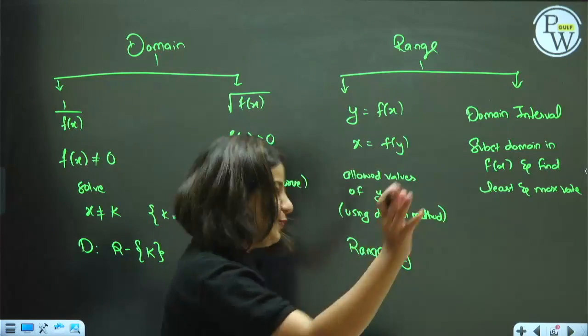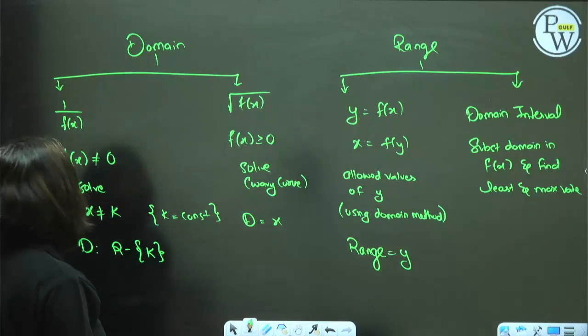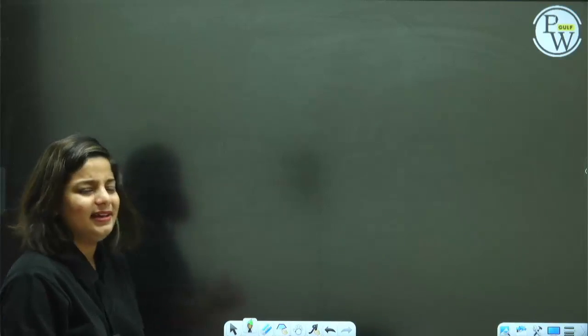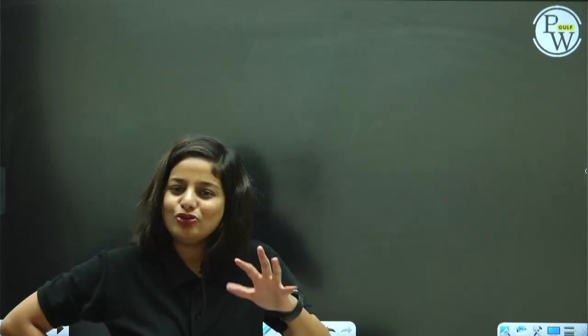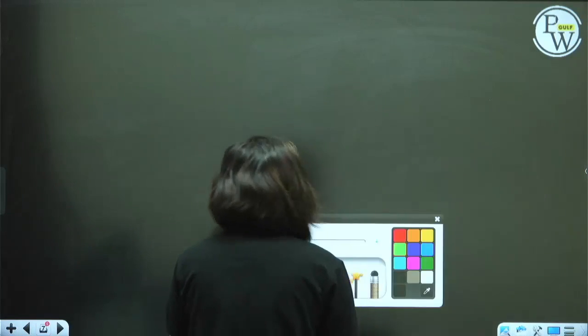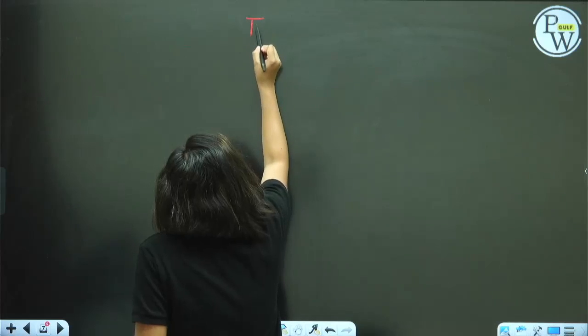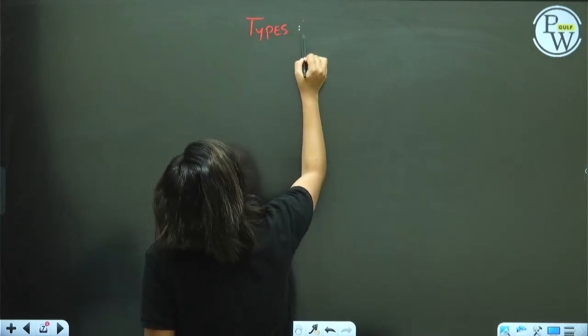After studying domain and range, we're done with Class 11 basics. Now let's move to Class 12 — which begins with types of relations!